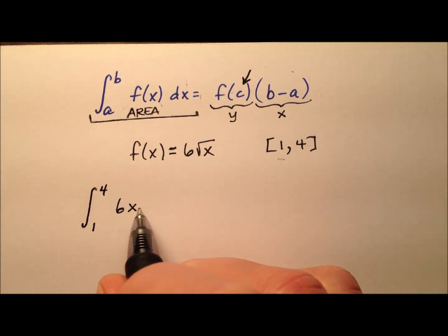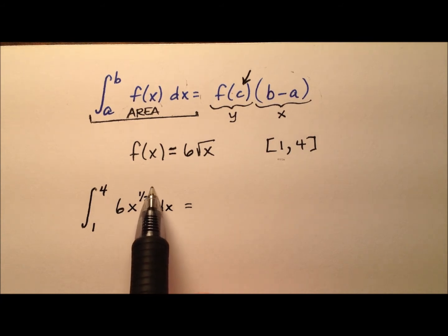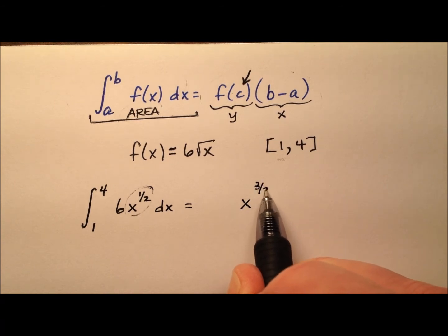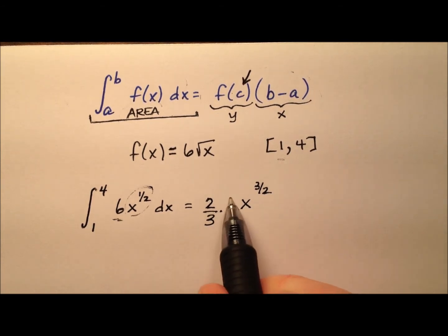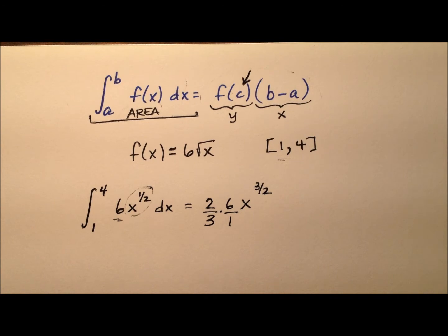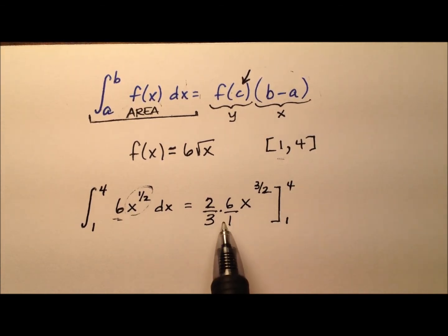It'll be from 1 to 4 of 6 times the square root of x. I'm going to rewrite that x as x to the 1 half power, so I'll use a rational exponent there. So integrating this, we're going to add 1 to the power. So that makes the x to the power of 3 halves. And then I'll divide by that 3 halves, which is the same as multiplying by the reciprocal, 2 thirds.